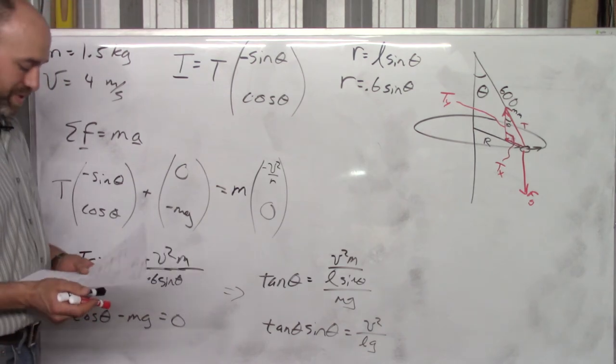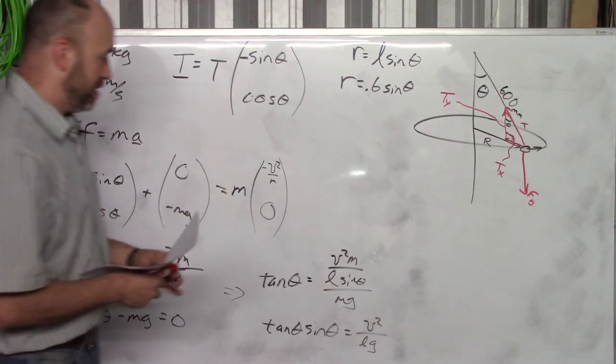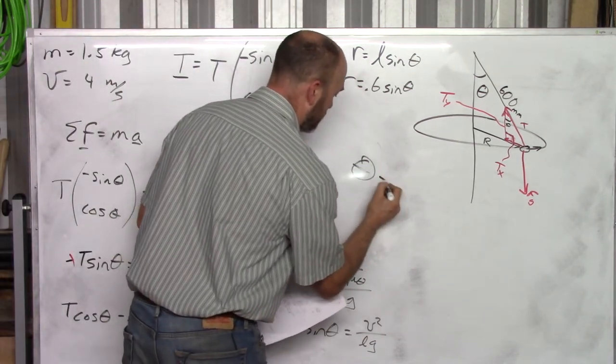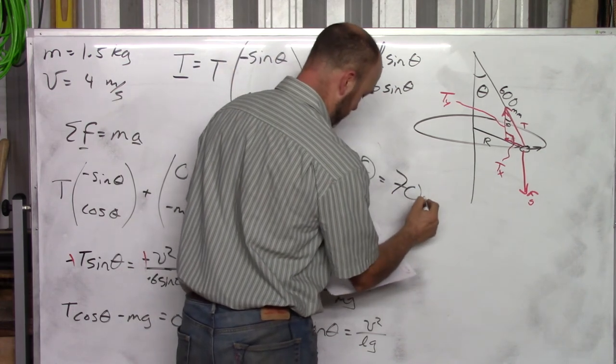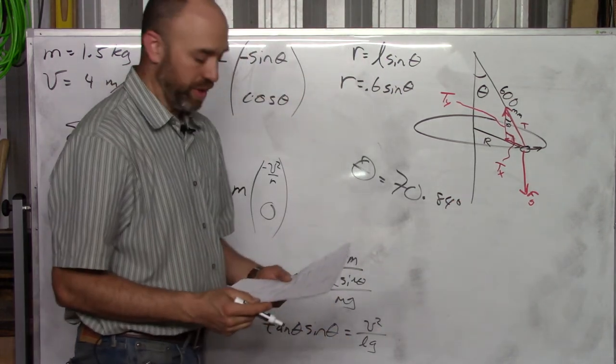There's other ways to do it if you have a fancier calculator. Anyway, you get theta out of that. Theta is, let's see, 70.84 degrees. That's the answer to part A.